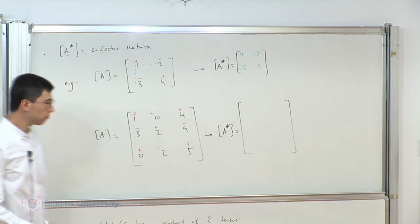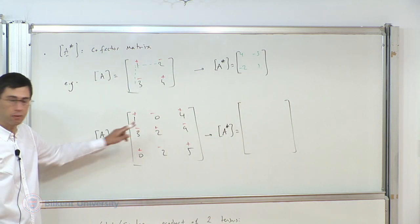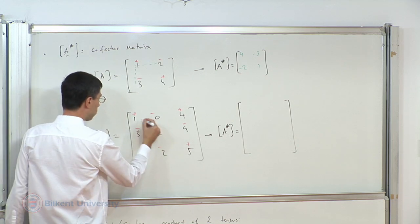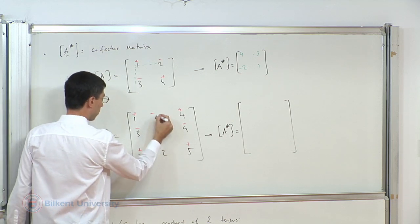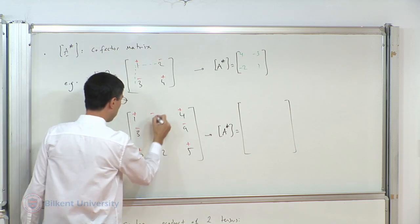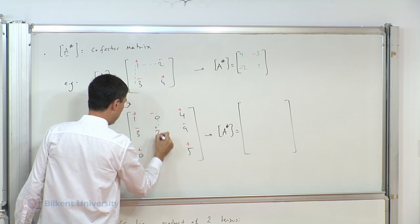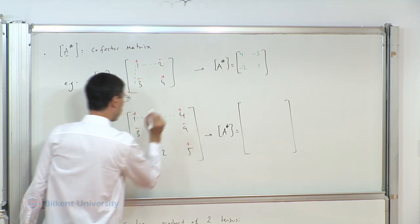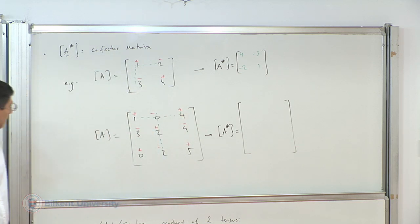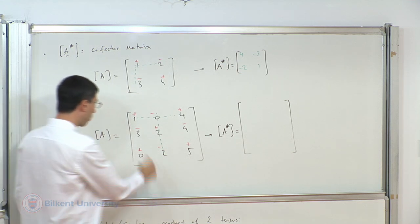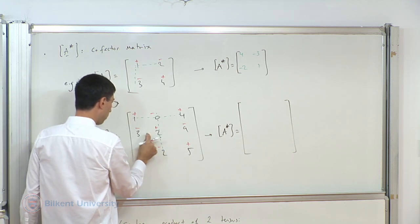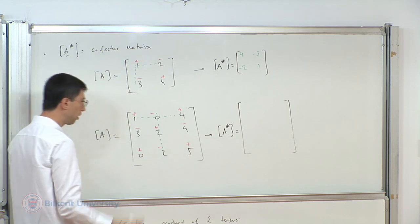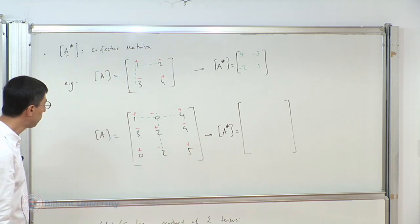There is a so-called Cayley-Hamilton theorem. I will not prove it in class, but if you're interested I can refer you to details. The Cayley-Hamilton theorem says that any tensor satisfies its own characteristic equation. This means you replace lambda with the tensor itself: A cubed minus the first invariant times A squared plus the second invariant times A minus the third invariant times identity equals zero.